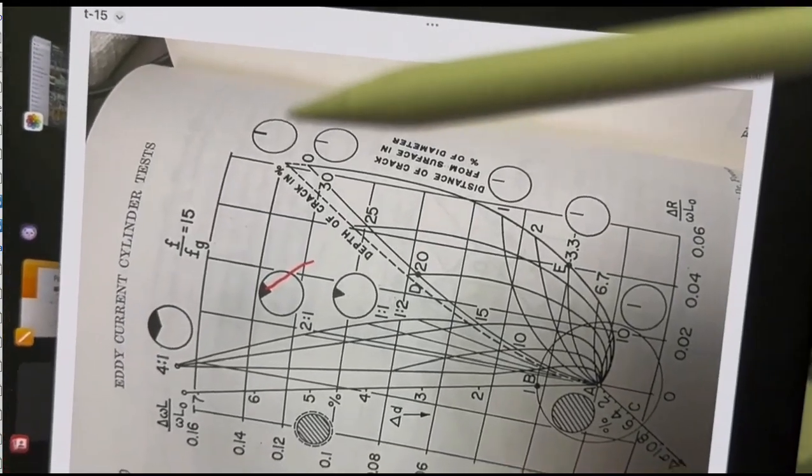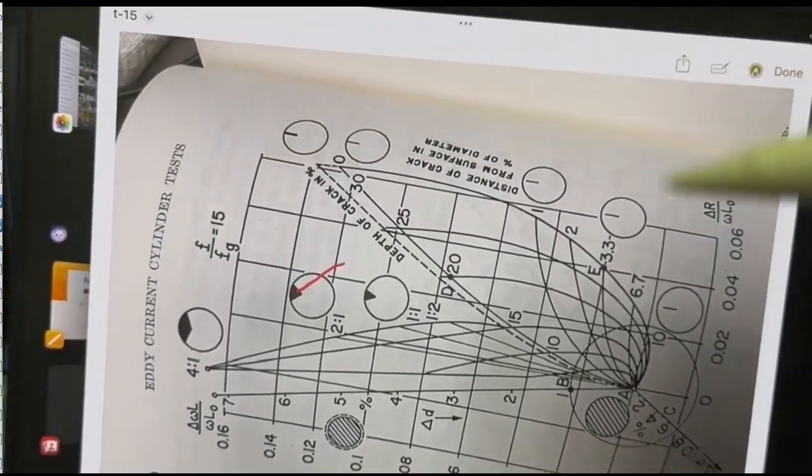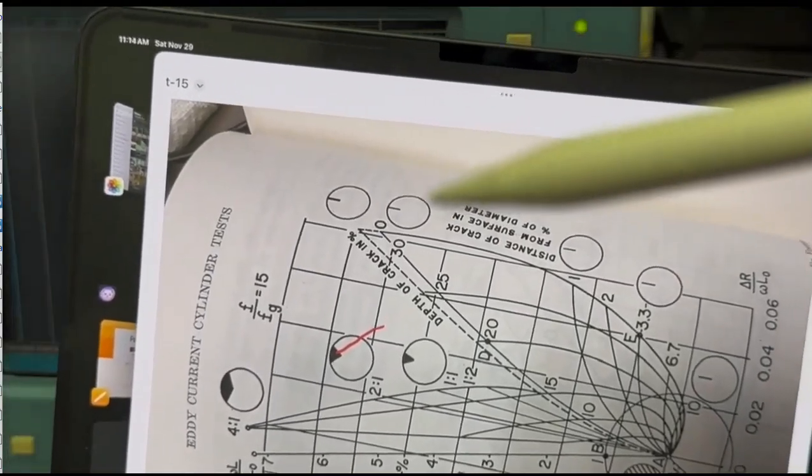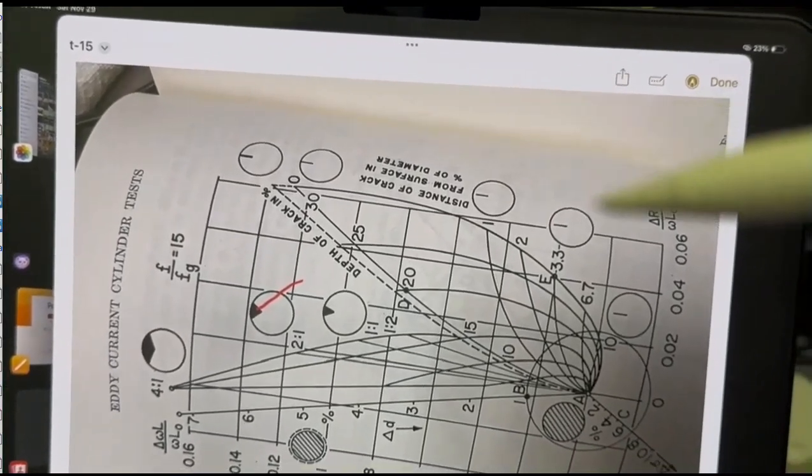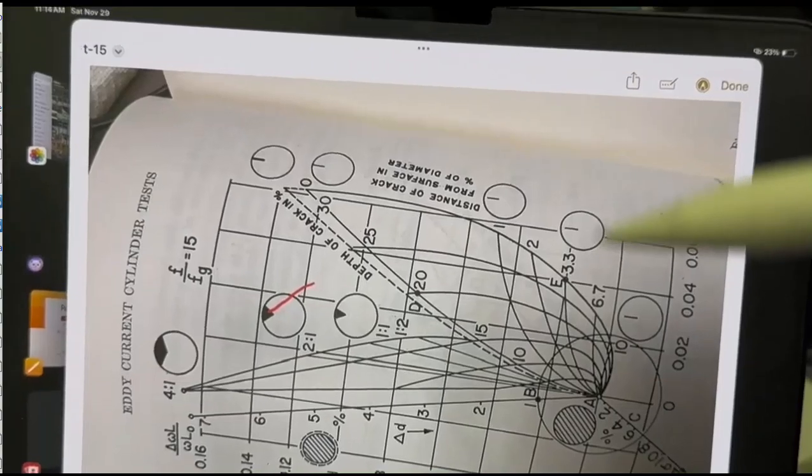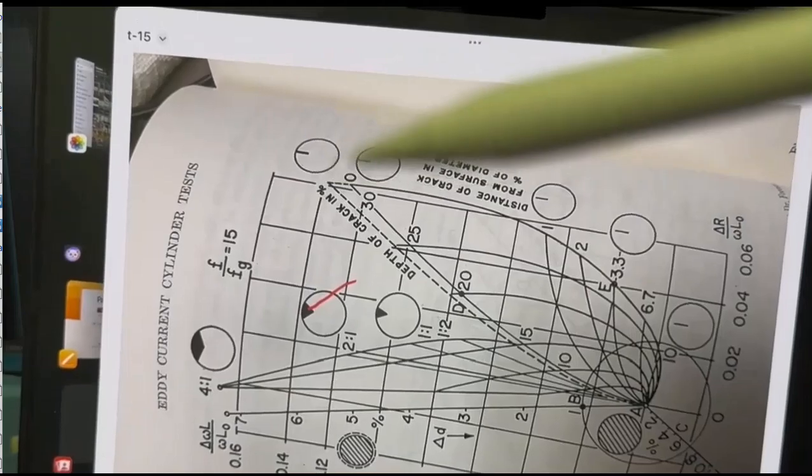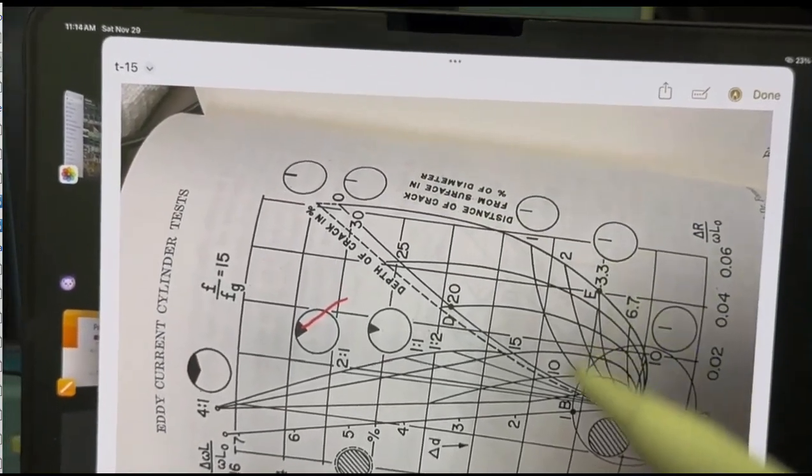And you've got a notch open to the surface. Get a great big signal here. This one right here. Then you get that same notch moved a little bit below the surface. Then you got it a little bit more below the surface and quite deep subsurface there. So you see the amplitude of the signal as well as the phase changes as you drop below the surface.